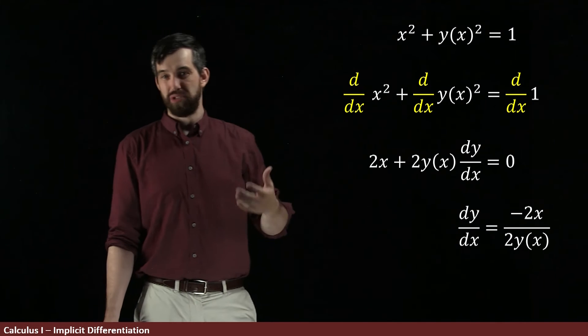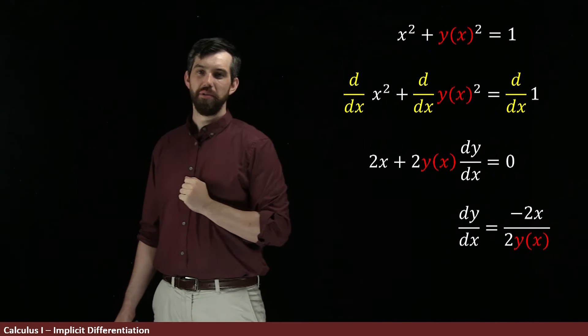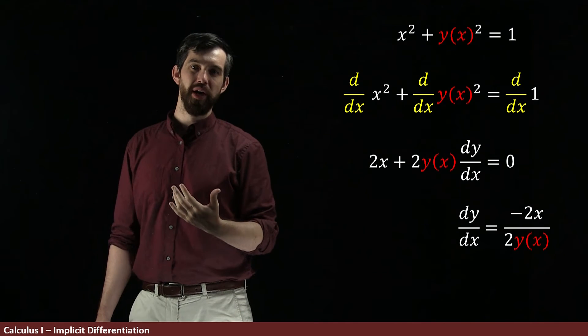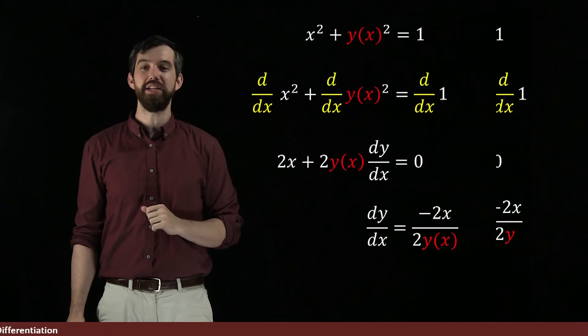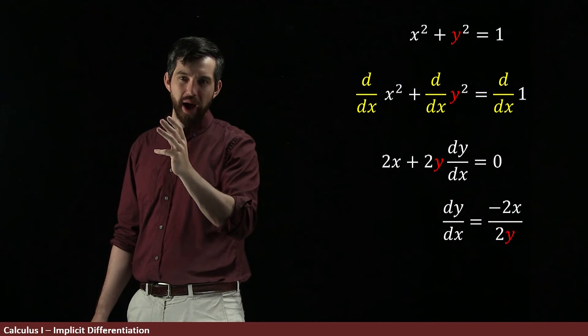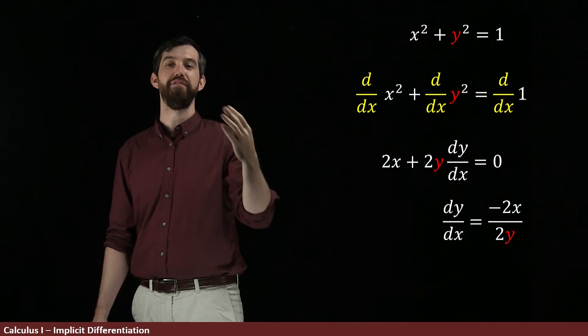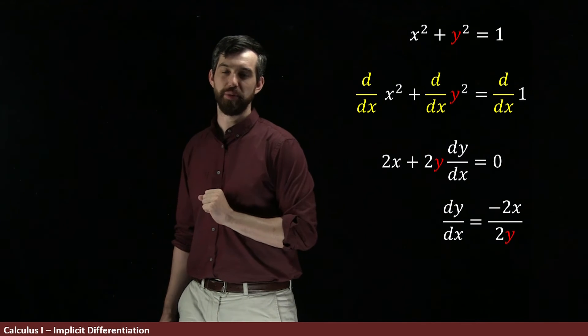Now I want to note that just notationally, I've written y of x in all of these different spots. But it's quite conventional for us to not actually write the of x everywhere, and instead just to treat this as y's in every one of these spots. But we're keeping in our mind that indeed these are going to be functions of x, and so that I need to indeed apply the chain rule at these spots.